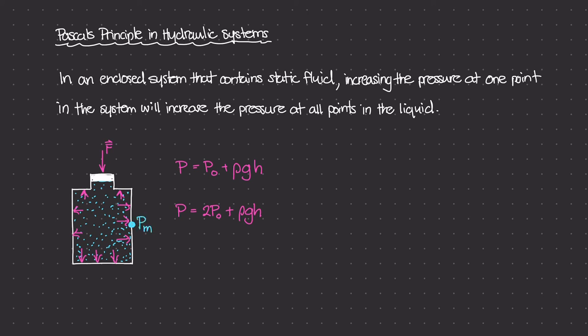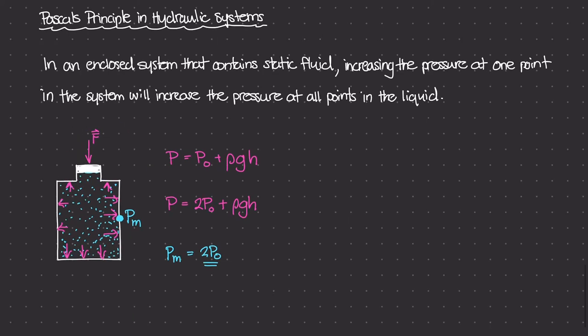then our P middle, the pressure at the middle of the container is going to be 2P0. That's still going to stay the same because we've increased this pressure by a factor of 2, the initial pressure, plus rho GH. In this case, H is now H over 2, just halfway from this point all the way down to the middle of the container.